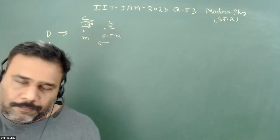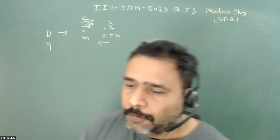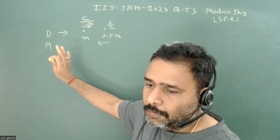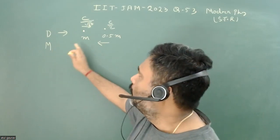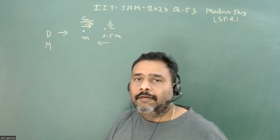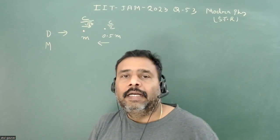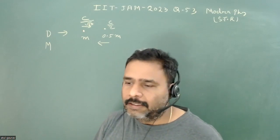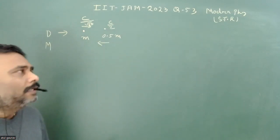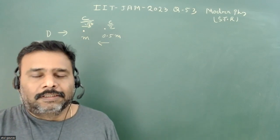Obviously we have to use conservation of energy, but before using conservation of energy, we have to check whether this detector is moving or not. So we have to find the momentum. If it is moving, then we have to take the complete relativistic energy, and if it is not moving, then the rest mass energy equals the mass of the detector.